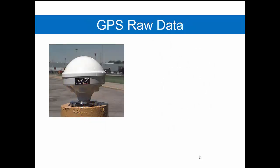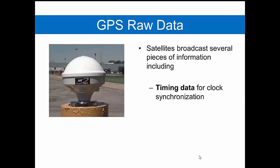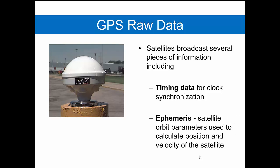Rather than talk at length about the frequencies and codes, I really want to talk about the data that we get through those frequencies and codes. The raw data we receive contains several pieces of information and the two I'd like to spend some time talking about are timing data that we use for clock synchronization and this thing we call the ephemeris.